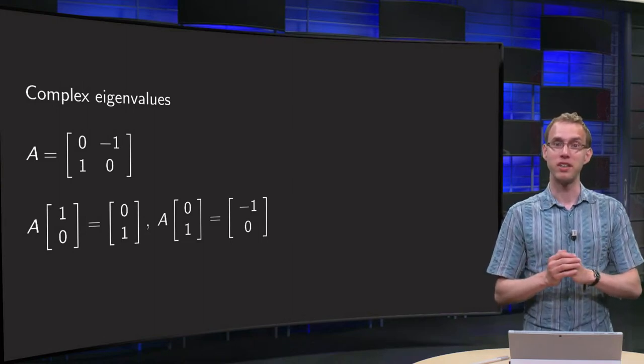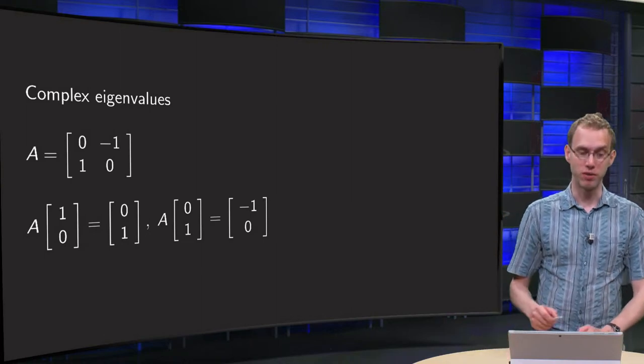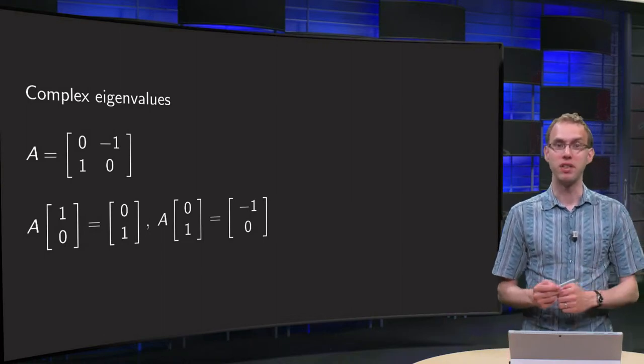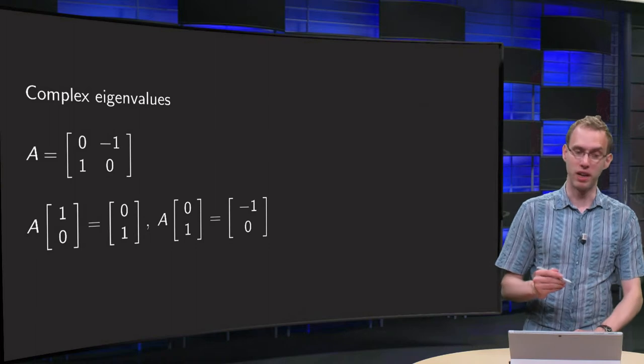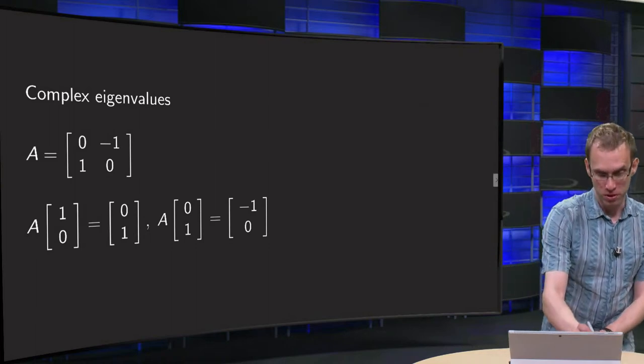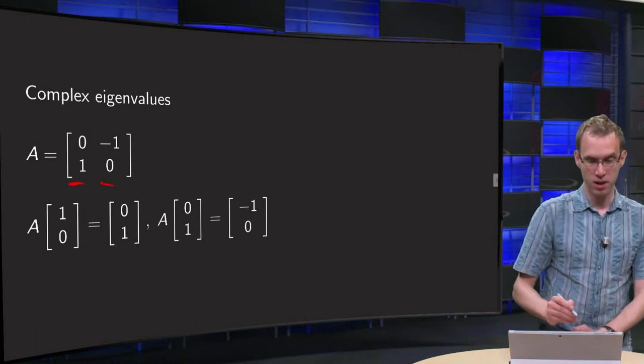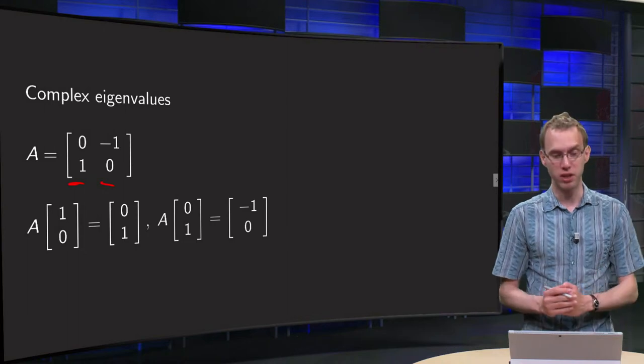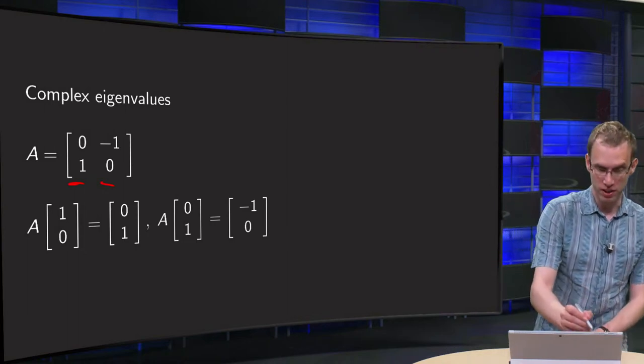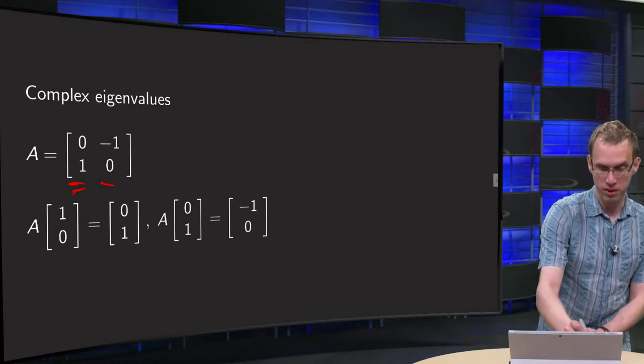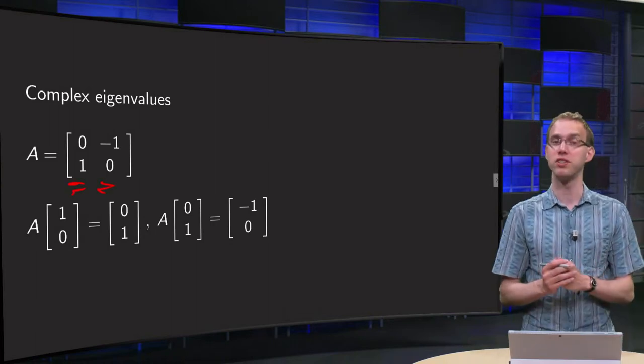Let us look at the following matrix A = [[0, -1], [1, 0]]. If we now compute A times [1, 0], we get 1 times [0, 1] plus 0 times [-1, 0], so we get [0, 1]. And if we compute A times [0, 1], we get 0 times [1, 0] plus 1 times [-1, 0], so we get [-1, 0].